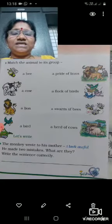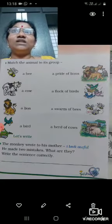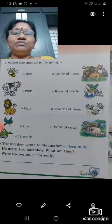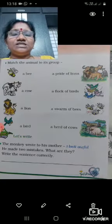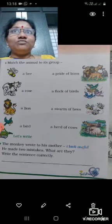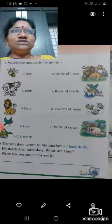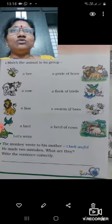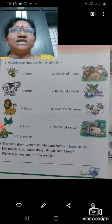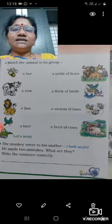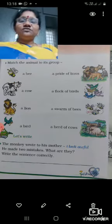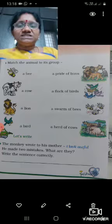A bee means one bee. One bee is a bee. Then you have a swarm of bees. For bees, you will use the word swarm — S-W-A-R-M. A swarm of bees.